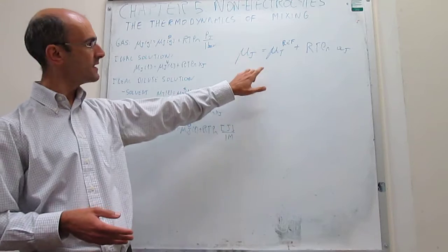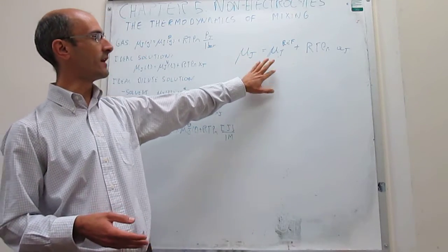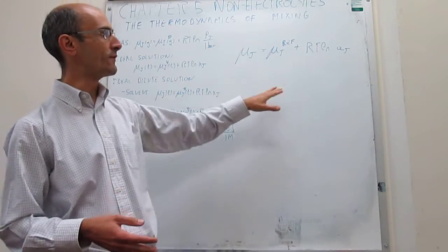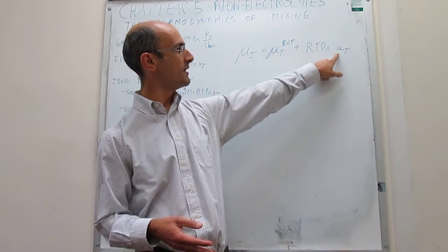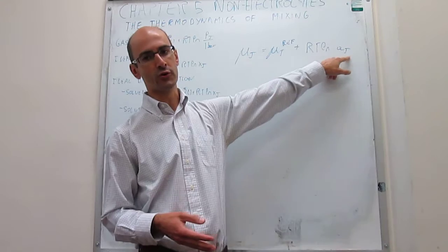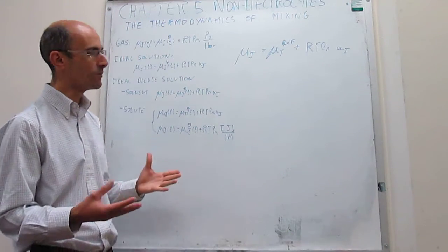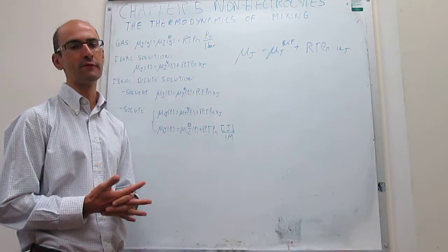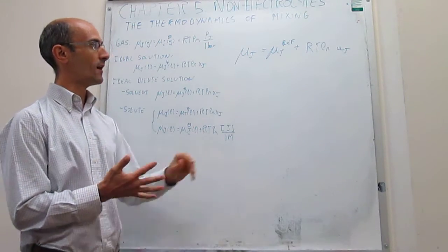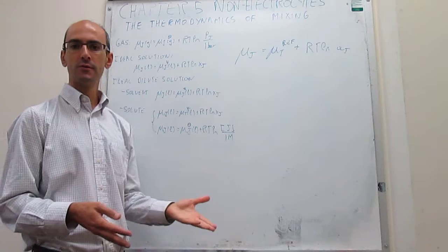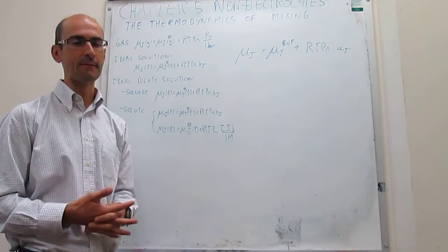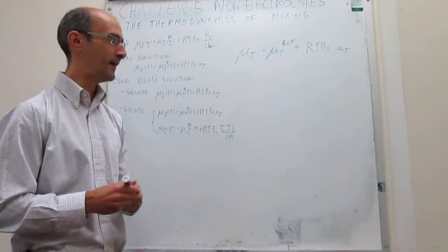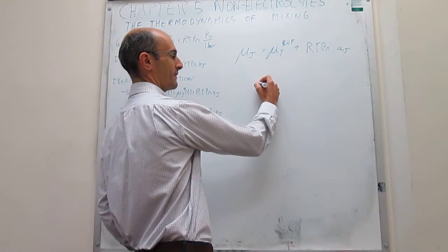The chemical potential of a species is equal to the chemical potential at the reference, plus a correction from the fact that you might not be at the reference concentration — this is just a measure of your concentration. What we're going to do in this video, and in the next couple of videos, is see how we apply these expressions to solve interesting problems in chemistry. The first one today is the mixing of two liquids in an ideal form.